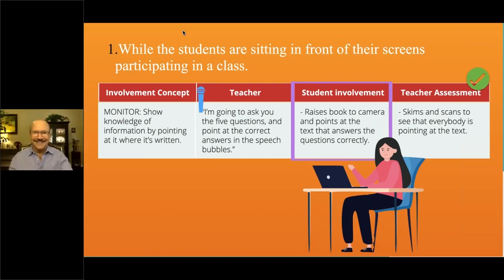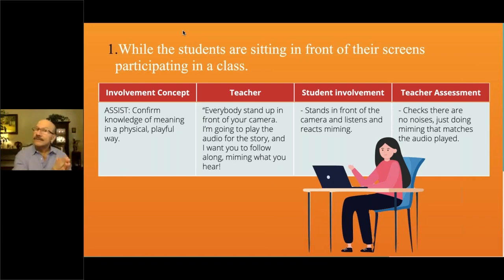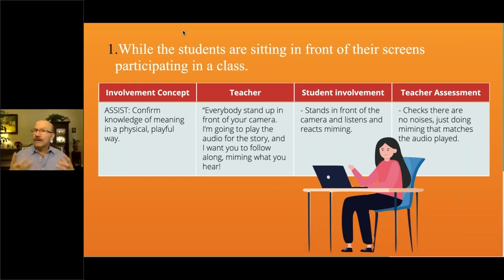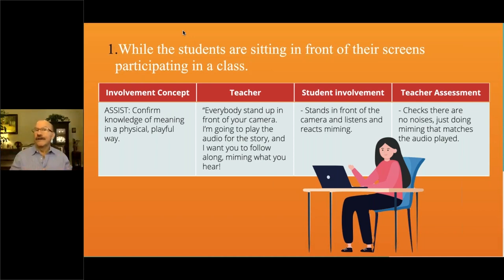Now we're in the third stage of the cognitive process of assessment for learning: assist. When you assist your students in this reading class, you want to confirm knowledge of meaning in a physical, playful way. Physical allows for involvement; playful really allows for involvement. So the teacher says: 'Everybody stand up in front of your camera — I'm going to play the audio for the story and I want you to follow along.'